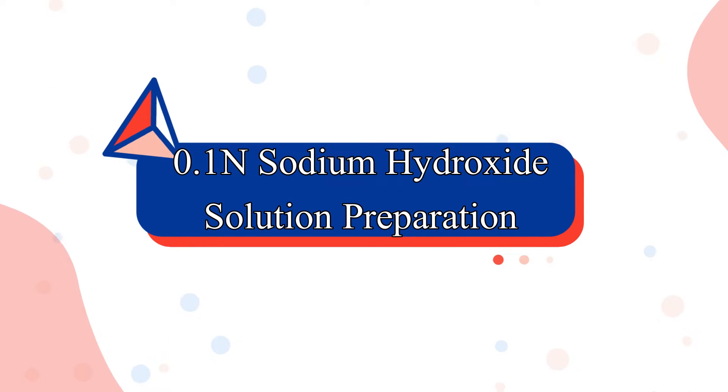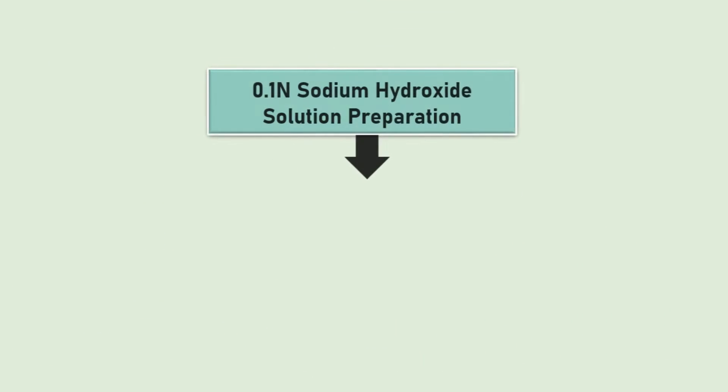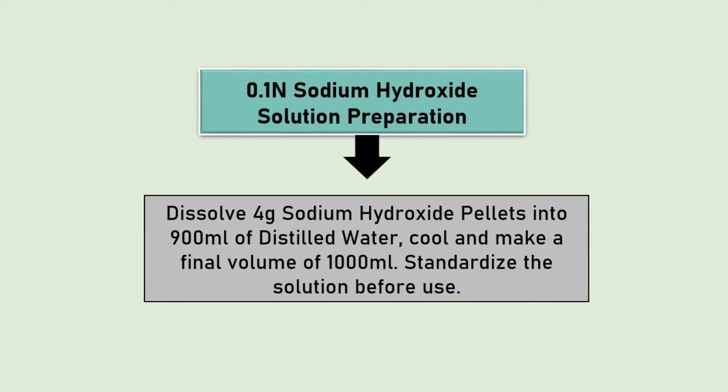At first we will prepare the chemicals. For the preparation of 0.1 normal sodium hydroxide, dissolve 4 grams of sodium hydroxide pellets with 900 ml distilled water and make the final volume of 1000 ml. Standardize the solution before use.